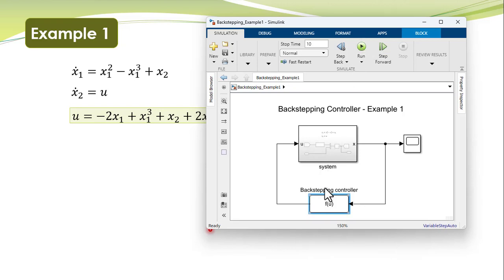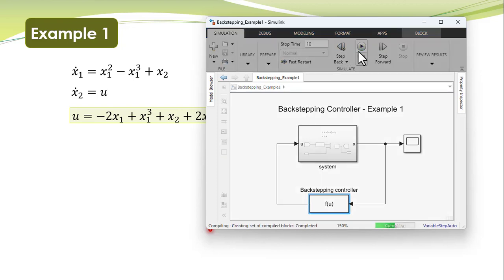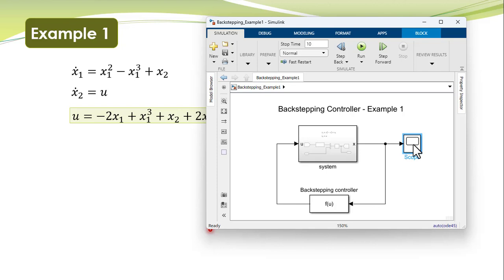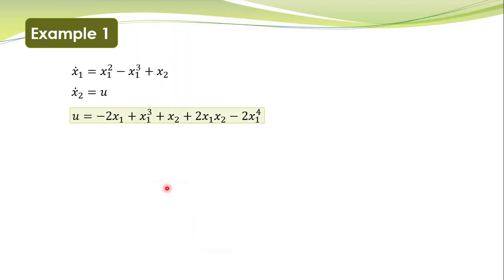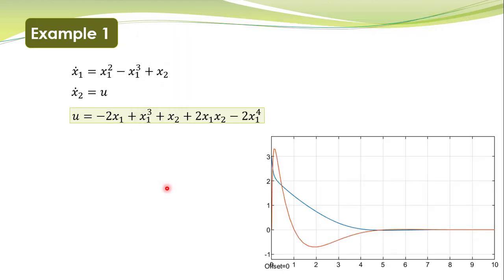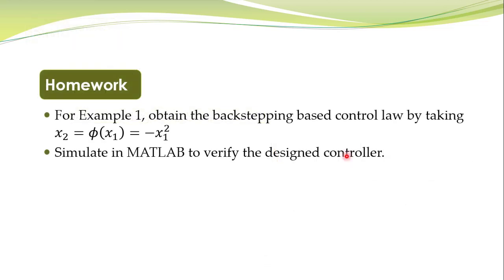We simulate it for several different initial conditions and see that this backstepping controller is performing very well. Here are the simulation results — corresponding to various initial conditions, the trajectories converge to the equilibrium point at the origin. This was the simple concept of the backstepping controller. In the next lecture, we shall extend the same concept to more complex non-linear systems having more than two states.